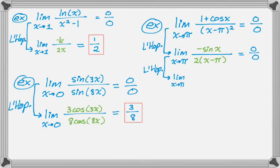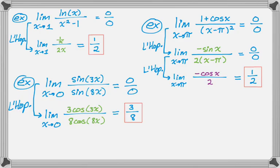Still the limit as x approaches π. The derivative of −sin(x) is −cos(x), and in the denominator I just get 2. Direct substitution gives me cos(π) = −1, so negative times −1 is 1 over 2, and there's the answer.